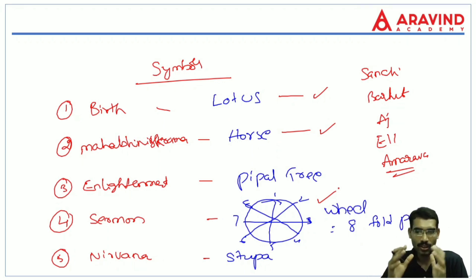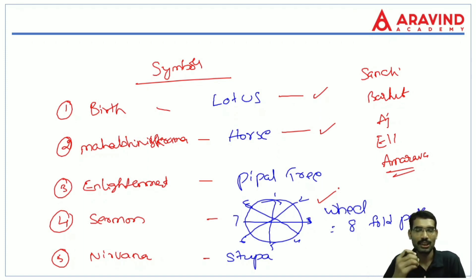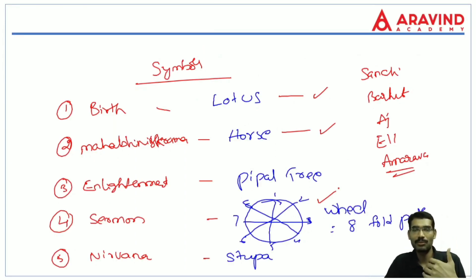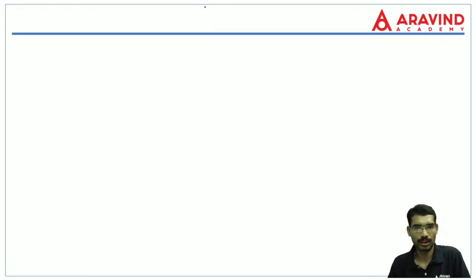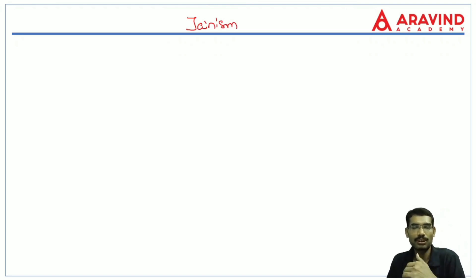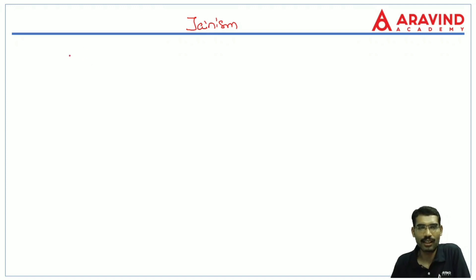Buddhism is an important chapter for examination purposes and has been dealt with in detail. Now we will see Jainism. In Jainism there is a tradition called Tirthankara. According to Jainism, there were 24 Tirthankaras — spiritual teachers. The last Tirthankara was Vardhamana Mahavira, who was contemporary to Buddha. But Jainism existed 200 years before Buddhism.